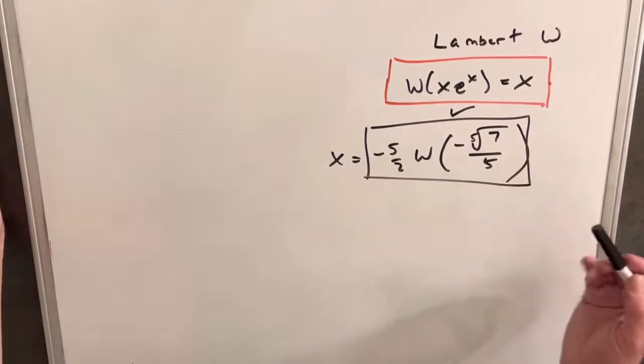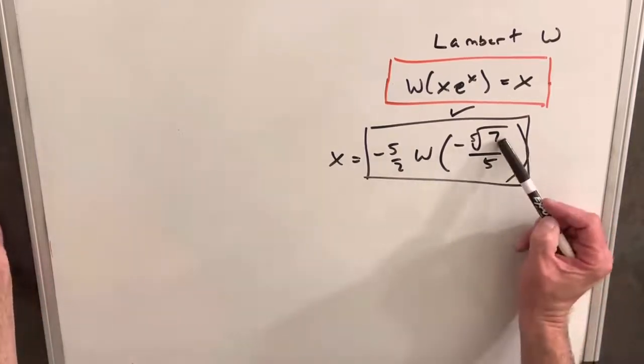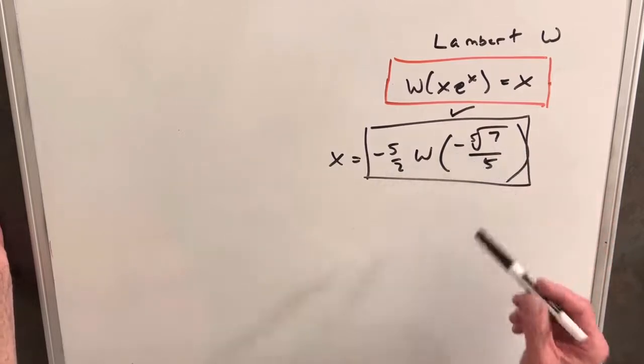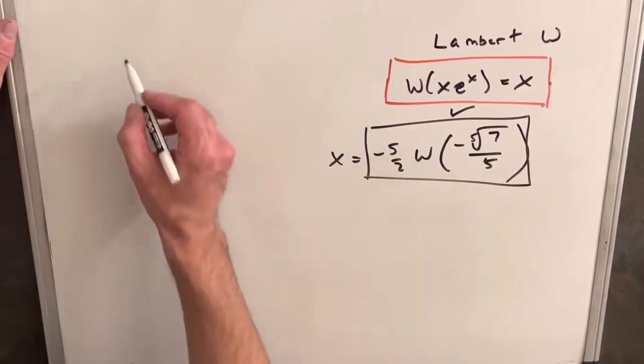Now let's just interpret this a little bit. We want to know, is this going to be a real solution? So we know the 5th root of 7 is going to be between 1 and 2. We have a negative. So we know that this is actually going to be in our region. Let's take a look at the graph of the Lambert W function.